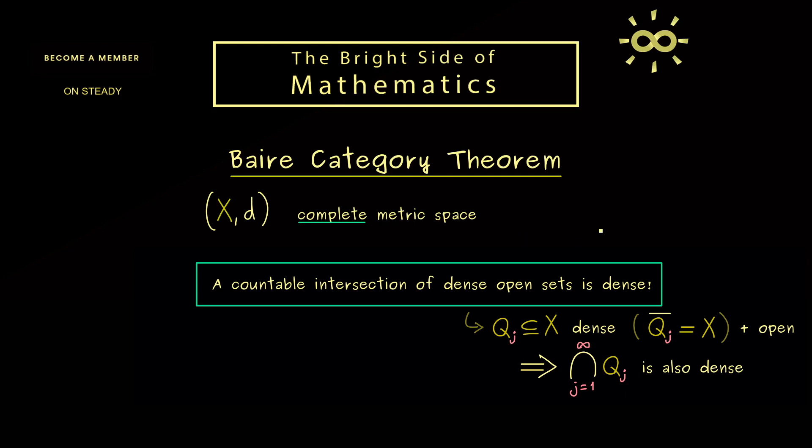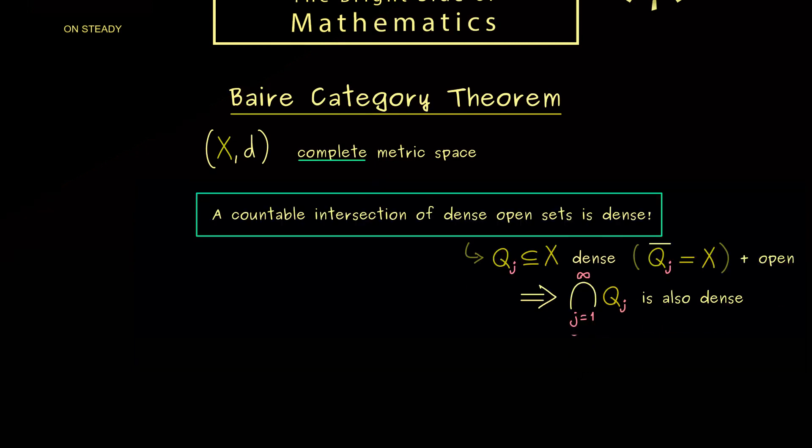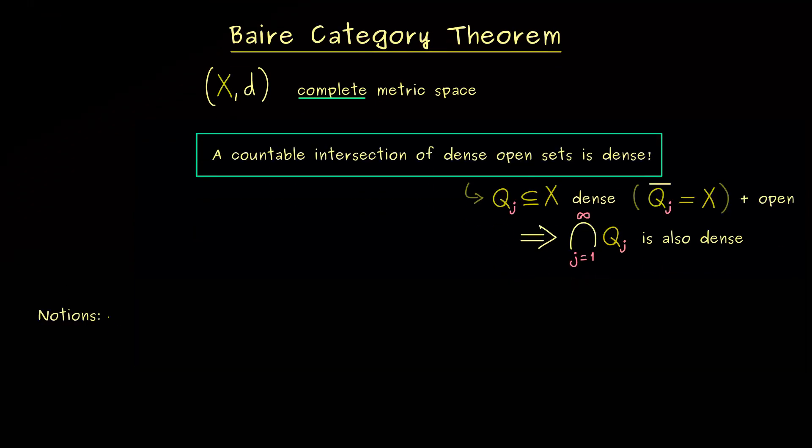However, in order to state other formulations we first need to introduce some new notions. These are topological notions, so we can formulate that in a topological space. Hence X can be a general topological space. And usually you would say you have a set X with a topology T. If you don't know what a topology is, you can simply watch the first video in my Manifold series. However, of course this is just more general, you can definitely take a metric space instead.